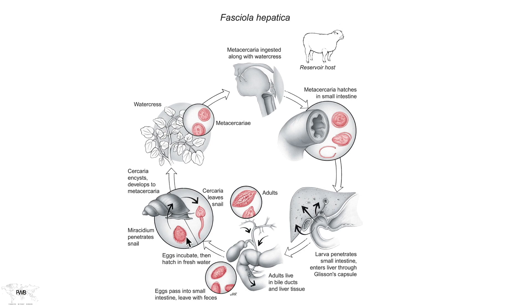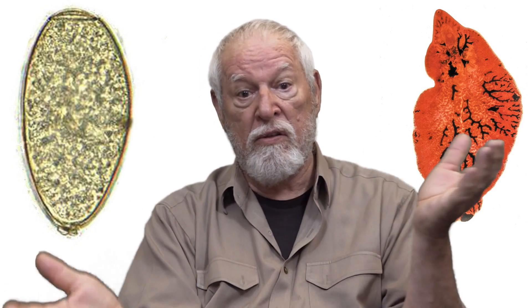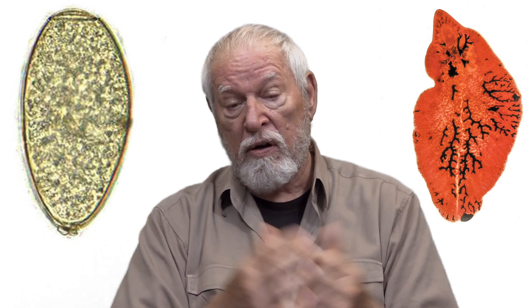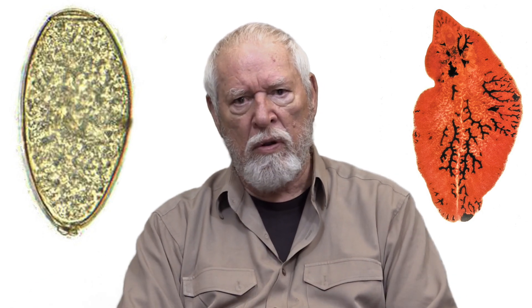The eggs then hatch in fresh water, releasing the miracidium — a very typical trematode life cycle. The miracidium then penetrates the foot of the snail, undergoes multiplication events inside the snail tissue, and eventually the cercariae swim towards the shore, encounter vegetation, attach to the leaf of a plant, the tail drops off, and they secrete their hard shell to resist the changing environment. They can last for months at a time without losing their viability.